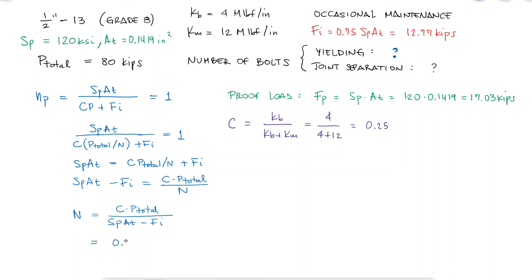Substituting the values, we find that we need 4.7 bolts, which we round up to 5 bolts, so that the factor of safety is actually greater than 1.